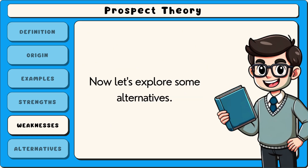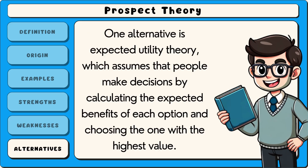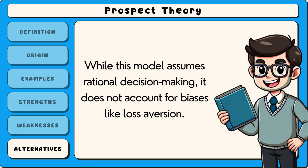Now let's explore some alternatives. One alternative is expected utility theory, which assumes that people make decisions by calculating the expected benefits of each option and choosing the one with the highest value. While this model assumes rational decision-making, it does not account for biases like loss aversion.